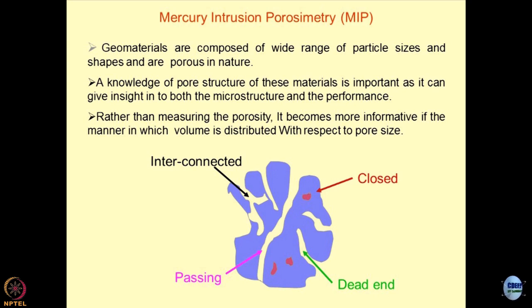Once you know pore structure and pore size distribution, you can understand the absolute porosity of the system. This porosity cannot be obtained by simply soaking geomaterials in water — the common method of soaking rock or soil samples in water for 72 hours to find weight change. The simple logic is that water molecules cannot enter the finest pores present in the grains, and hence the porosity obtained by soaking is not the true porosity.